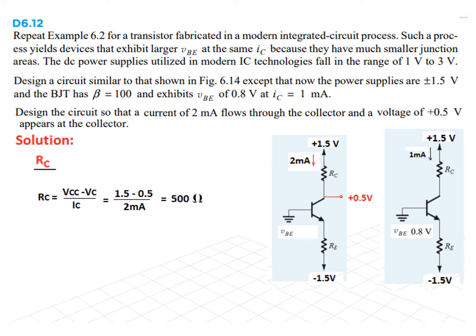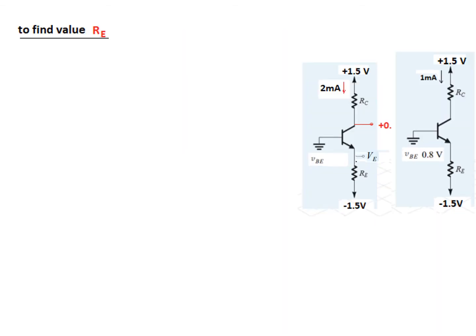So, RC is VCC, this is called VCC. VCC minus VCE, divided by IC, 1.5, 0.5 and 2 milliampere, so 500 ohms is RC. Now, the second RE. Now, for RE, we have to make some effort. Let's see.